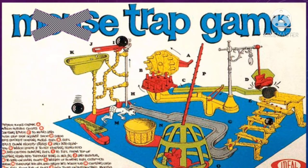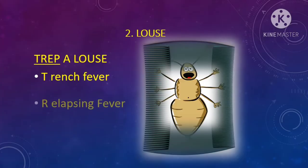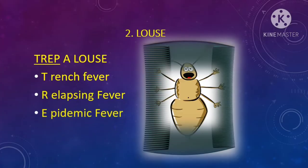Now we will learn about diseases caused by louse, using the mnemonic TRAP — with a different spelling, T-R-E-P. T stands for trench fever, R stands for relapsing fever, E stands for epidemic fever, and P stands for pediculosis.